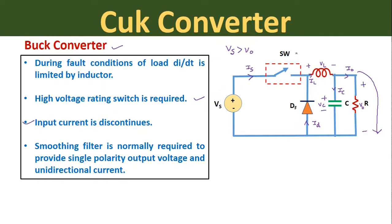Third point: the input current is discontinuous in nature. Whenever the switch is in the ON condition, it acts as a short circuit and the source is connected with the load. But whenever switch SW is in the OFF condition, it acts as an open circuit, and during the open circuit condition the load will be disconnected from the source. Therefore the source current Is will become discontinuous in nature in the buck converter.